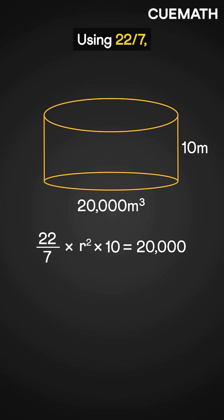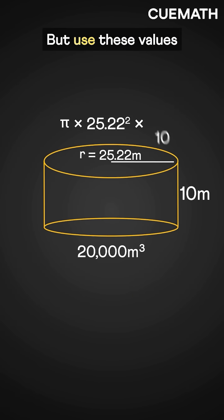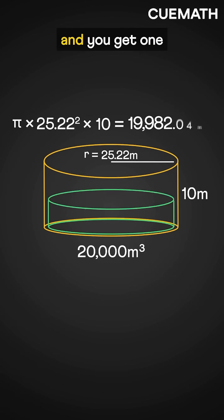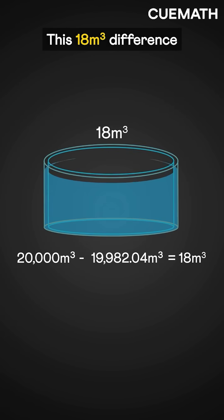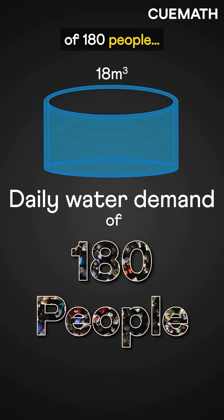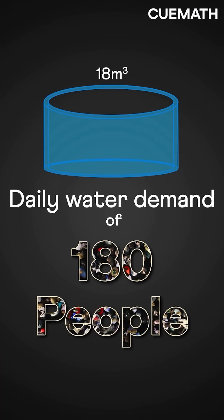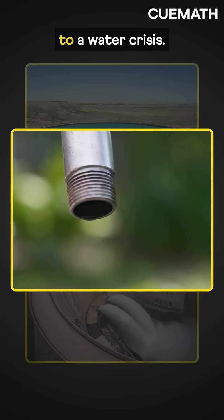Using 22 over 7, its radius is 25.22 meters. But use these values to build the tank, and you get one with a lesser volume. This 18-cubic-meter difference could have met the daily water demand of 180 people, causing a water shortage. Use it for large reservoirs or dams, and this could lead to a water crisis.